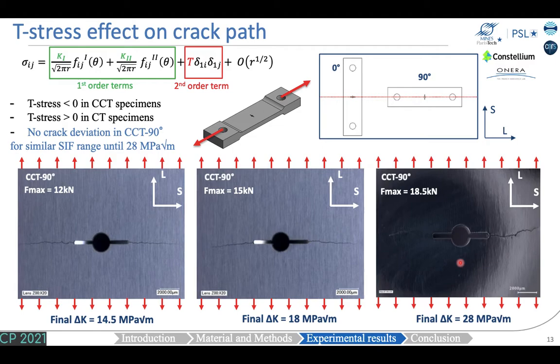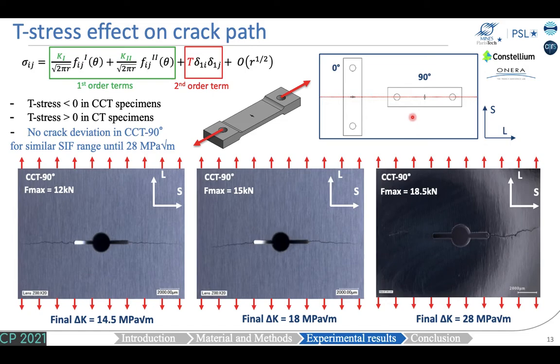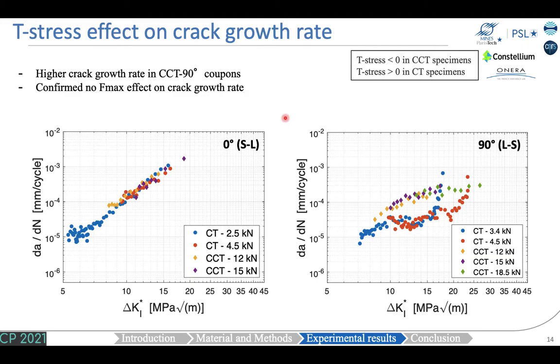Additional tests were performed on CCT specimens to evaluate the role of the T-stress on crack deviations. In the stress expression, the stress intensity factors K1 and K2 are the first-order terms, while T-stress is the second-order, first non-singular term. CCT specimens with a notch oriented at 90 degrees to the rolling direction showed no deviation until a ΔK of 28 MPa√m. The Paris curves confirmed the minor influence of stress level on crack growth rate. However, crack growth rates are higher in CCT 90-degree specimens compared to CT 90-degree specimens.